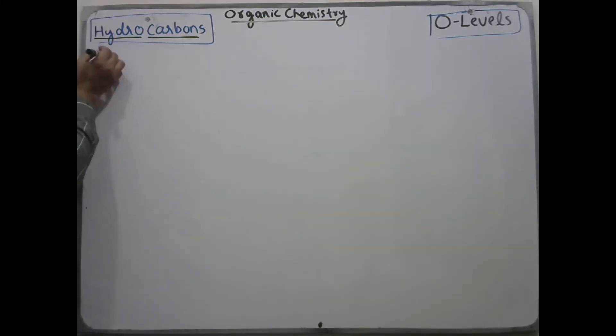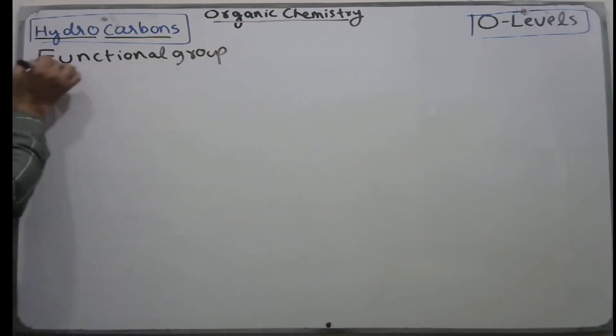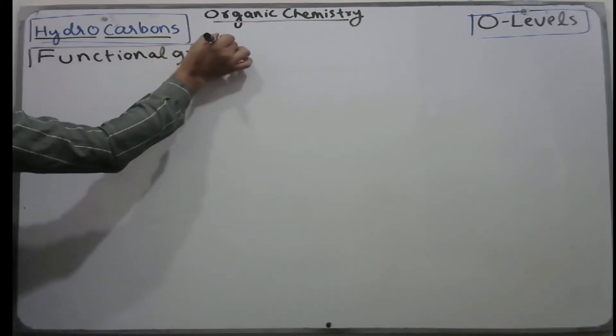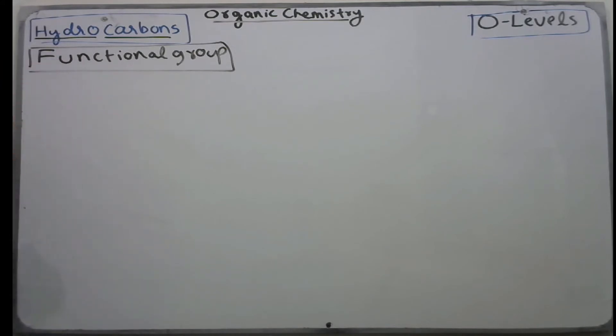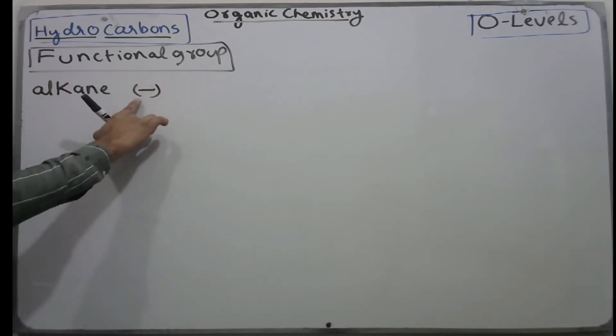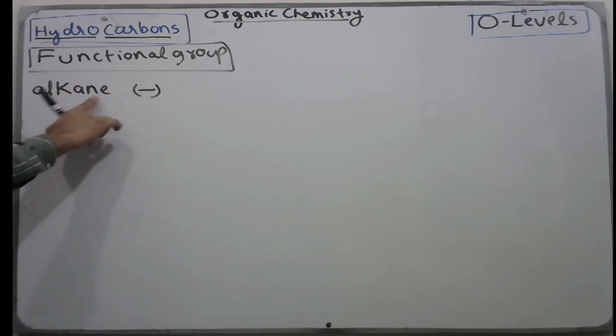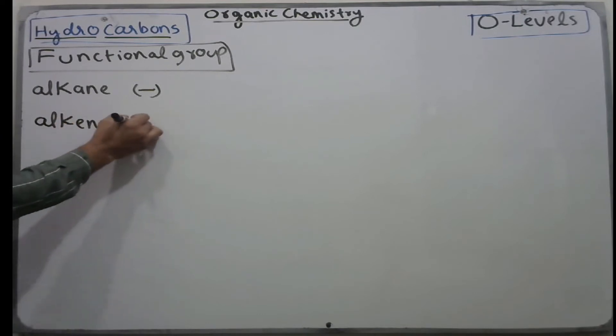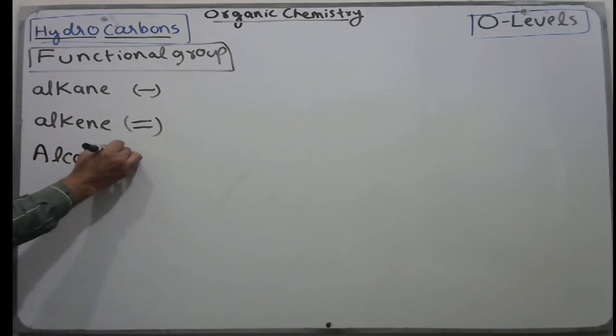Now we discuss functional groups. For alkanes, we use single bond. It is not a functional group but an abbreviation for alkanes. For alkenes, the functional group is a double covalent bond. If you see a double bond in a hydrocarbon, it will be named alkene. For alcohols, if you see OH with carbon present, they are named alcohols.